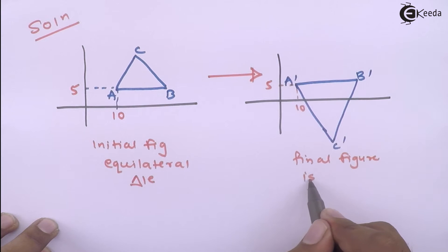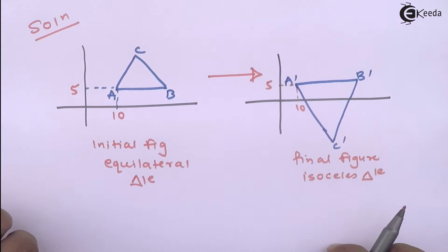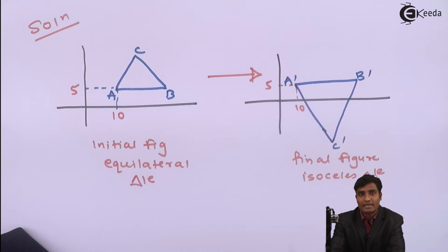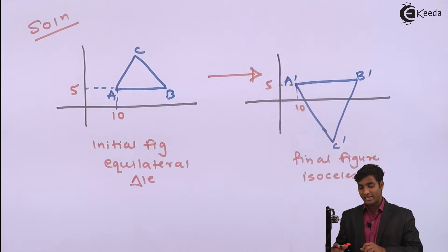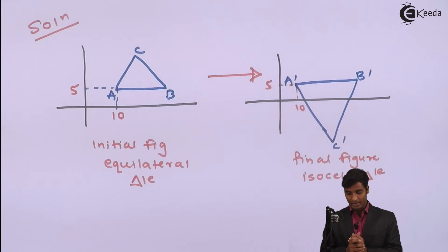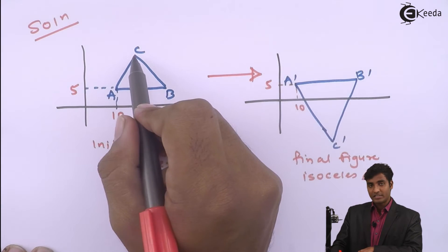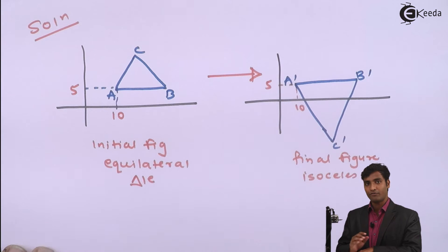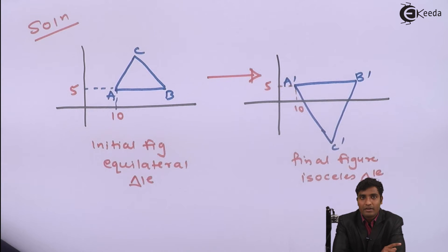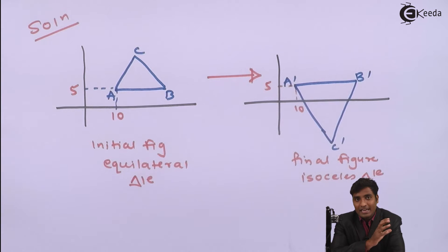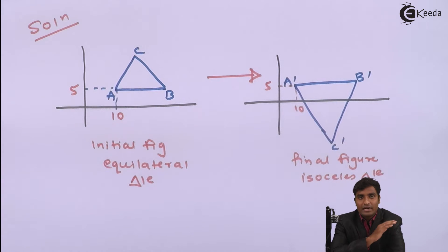This equilateral triangle is to be converted into an isosceles triangle, so we have to perform a series of transformations. From the figure it is clear that the size of the isosceles triangle is greater than the size of the equilateral triangle, and point C was in the first quadrant while point C-dash is in the fourth quadrant. So we have to do scaling and mirror — that is reflection. First, we will do translation, because scaling is done with respect to the origin and the figure must be brought to the origin before scaling.